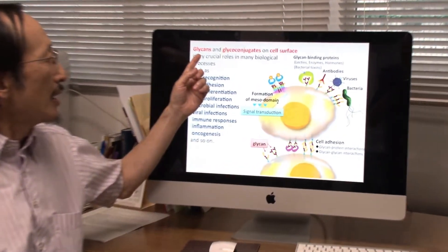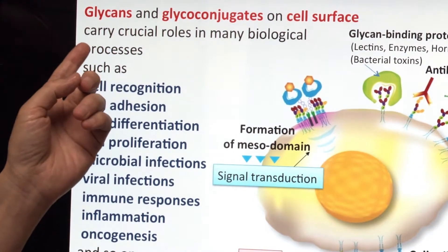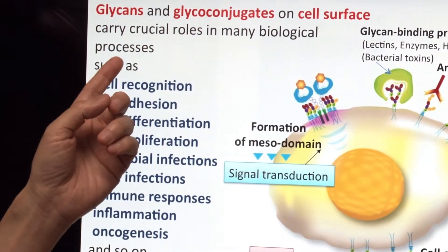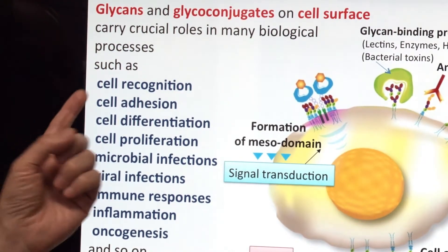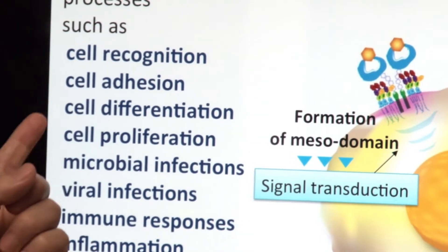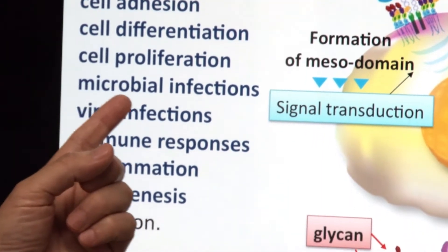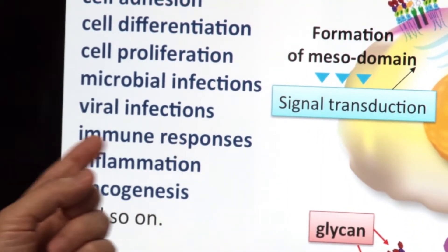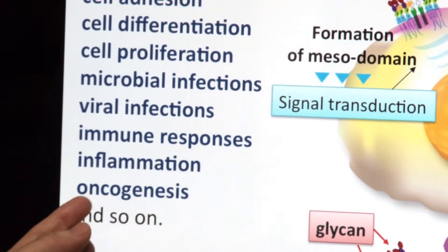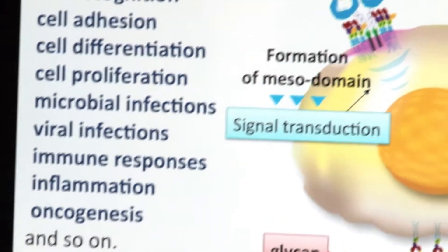Glycans and glycoconjugates on cell surface carry crucial roles in many biological processes such as cell recognition, cell adhesion, cell differentiation and proliferation, microbial and viral infections, immune responses, inflammation, oncogenesis and so on.